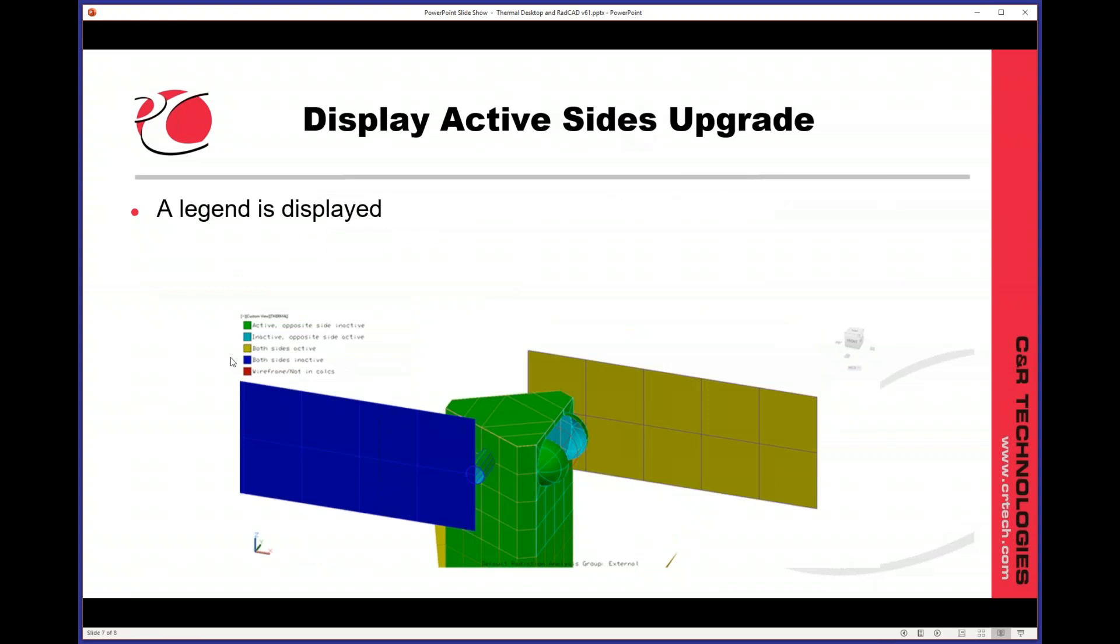In RADCAD, with the display active sides, and of course this also applies to display top side, display domain, tag set activity, displaying insulation, all of those options. We now display a legend, just like we did in the color by properties.